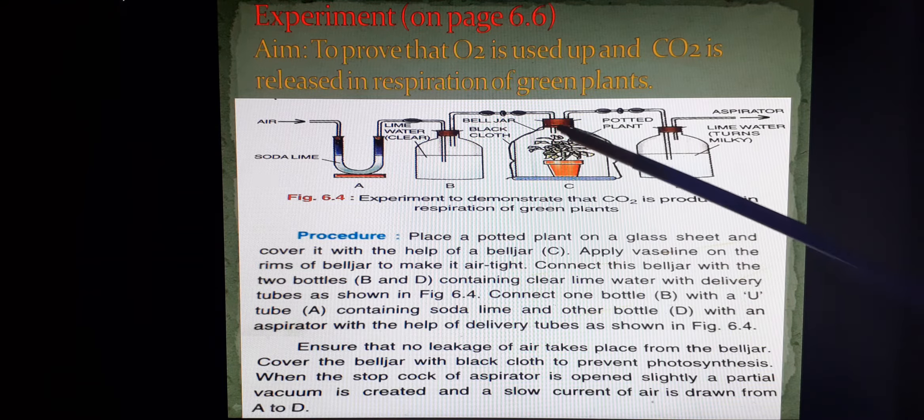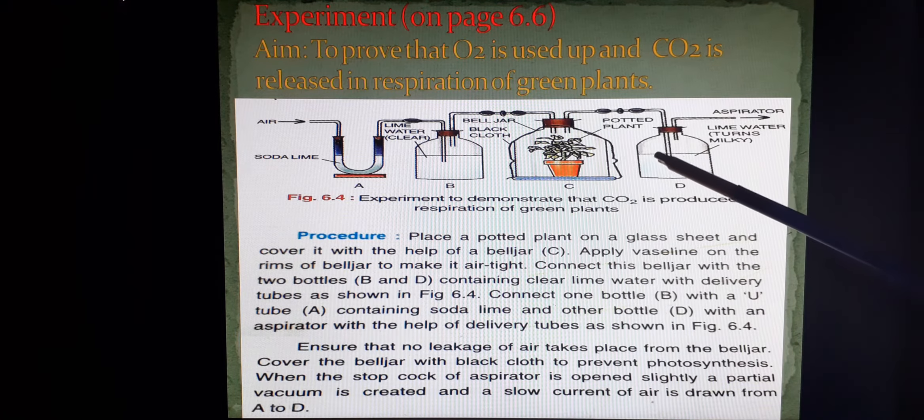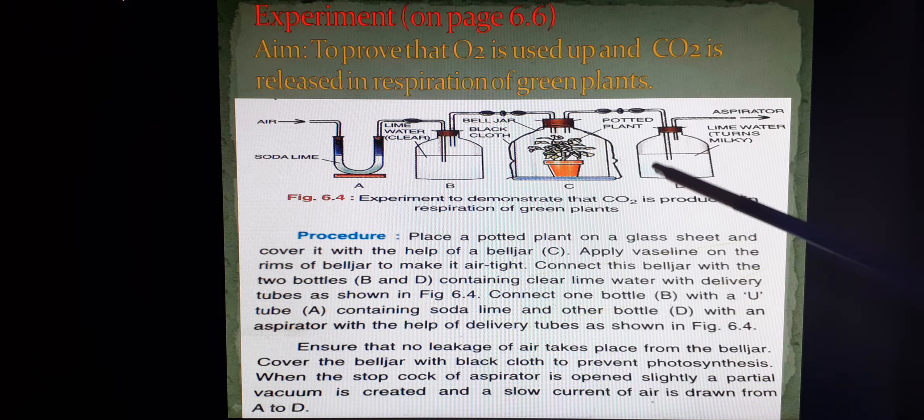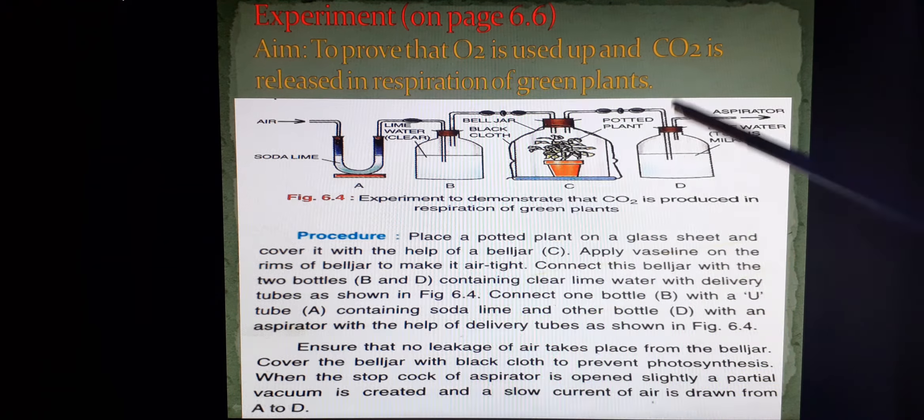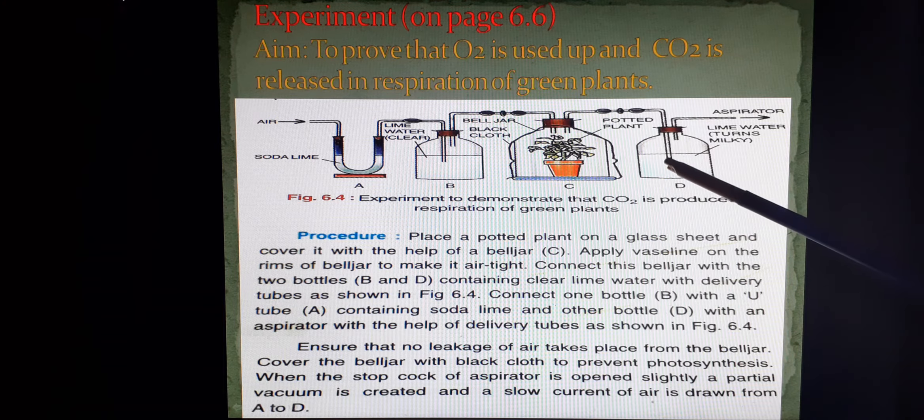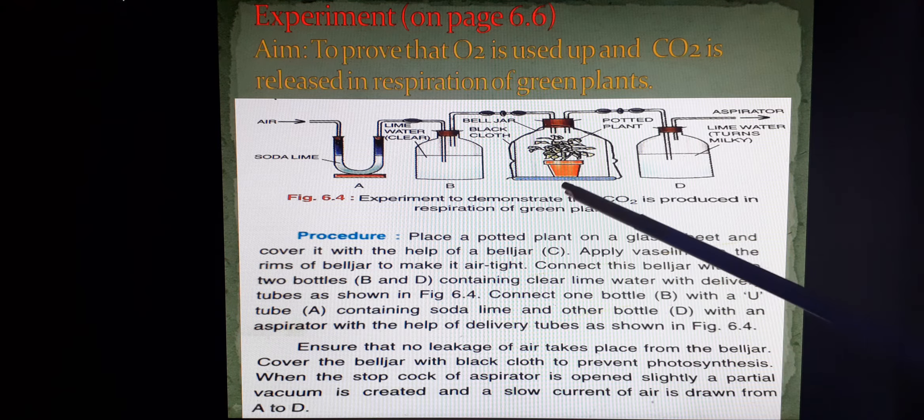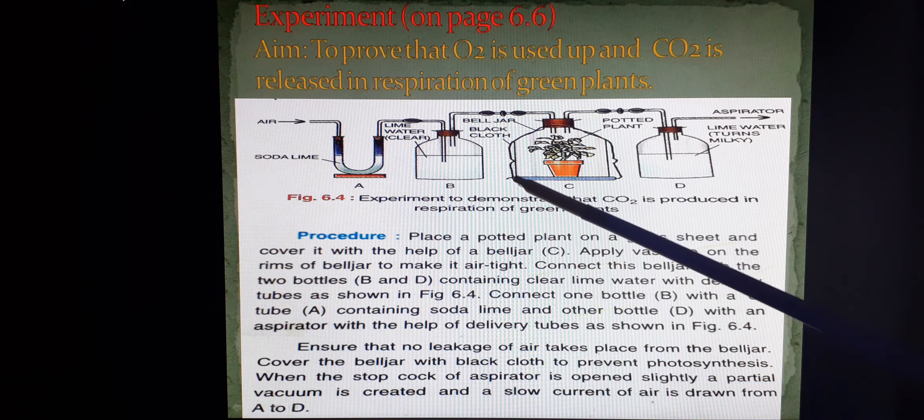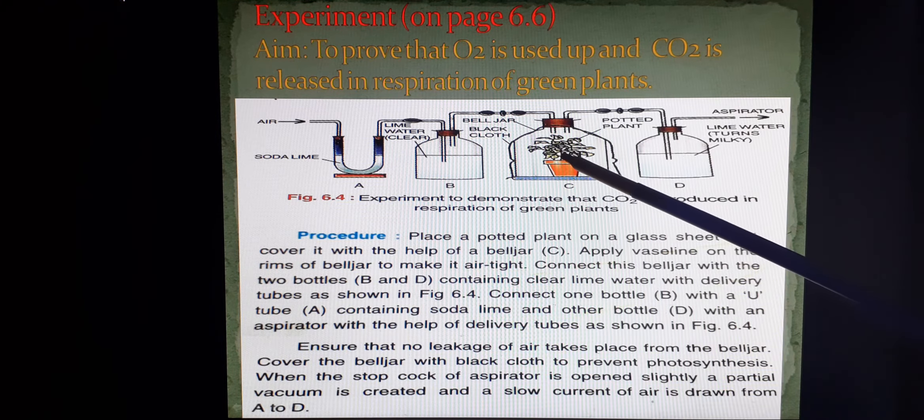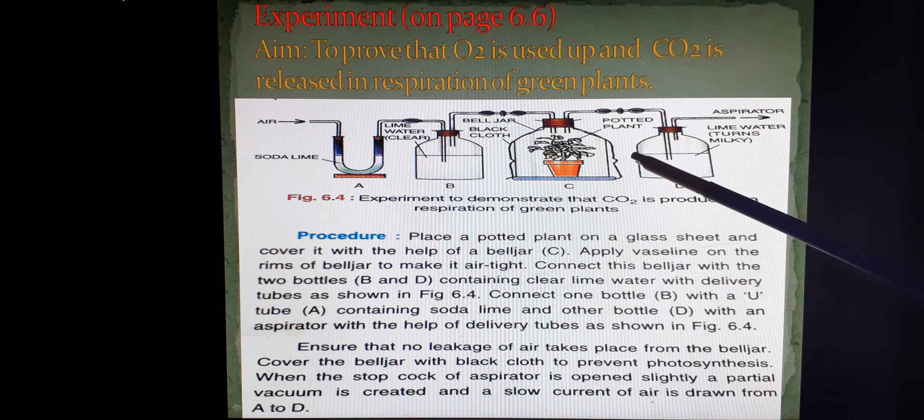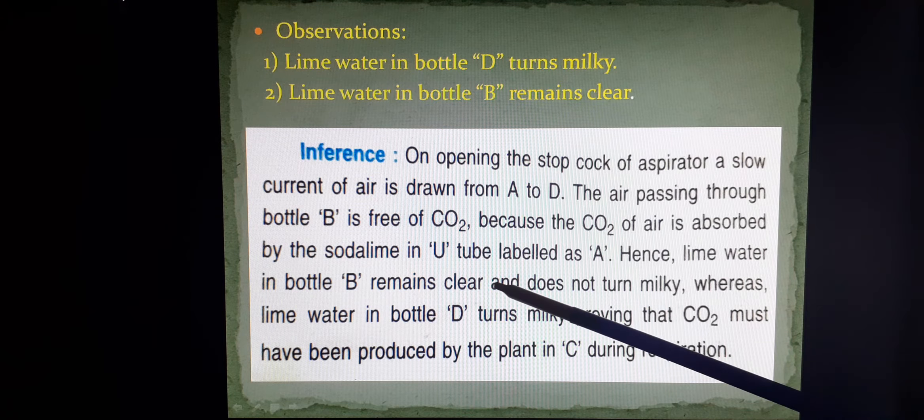This carbon dioxide moves to the bent tube towards the D bottle and turns the lime water milky. This turning of lime water milky indicates that the plant had released only carbon dioxide after respiration. So this experiment setup proves our aim that the plant has utilized oxygen for respiration and released carbon dioxide. Here we have placed the observation and the inference for your understanding.